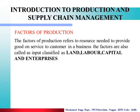Now we see the various factors of production. Factors of production means which factors affect production. The factors of production refer to the resources needed to provide goods or services to customers in a business. The factors are also called inputs — land, labor, capital and enterprises. With the help of these, raw material is converted into finished goods.